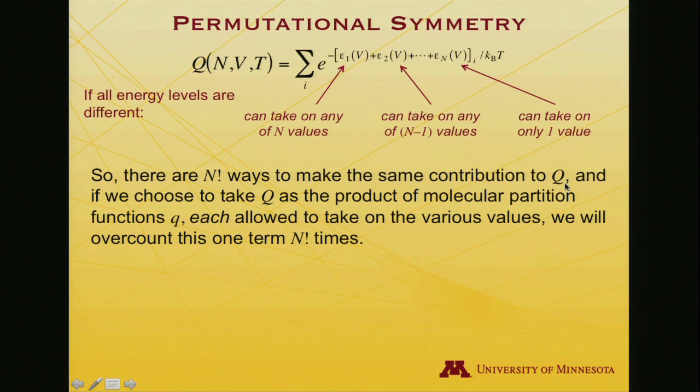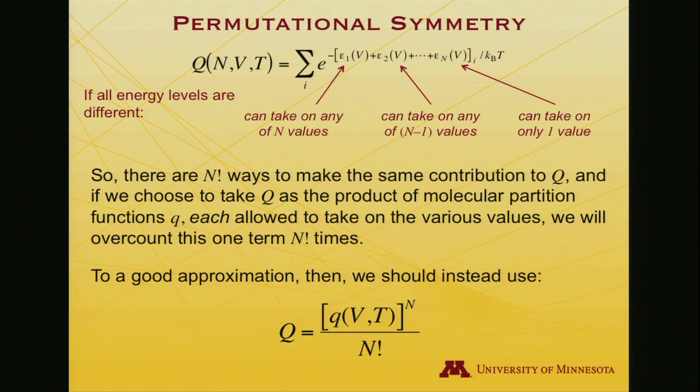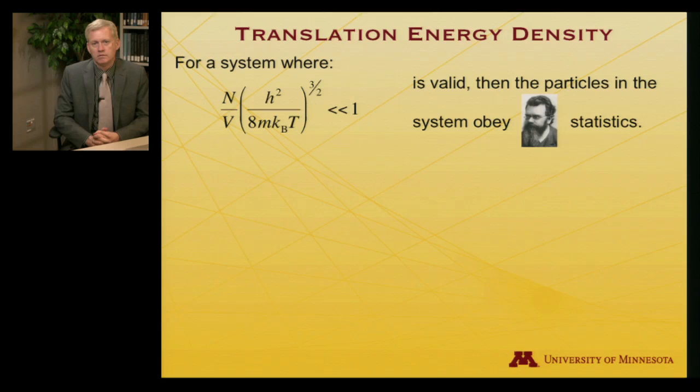So there are n factorial different ways, then, to make the same contribution to the ensemble partition function. And if we choose to take Q as the product of the molecular partition functions, that is, capital Q, the ensemble, as that product, each being allowed to take on the various values, we'll over-count that term, we'll make it again and again and again with different permutations. How many permutations? n factorial of them. So we should divide by n factorial in order to remove that non-allowed distinguishability and come up with an ensemble partition function, capital Q, and we actually employed this, I told you I'd derive it, and now we have. And it is appropriate, then, for fermions and bosons when they are indistinguishable particles.